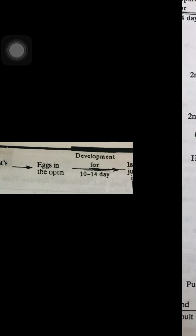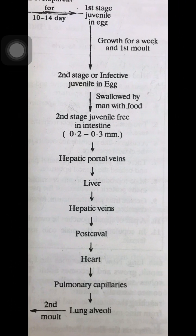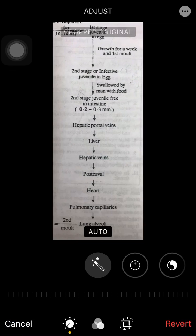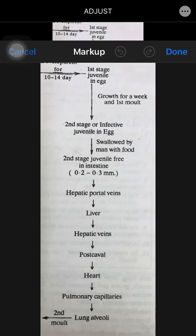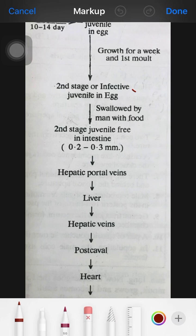After the first juvenile stage, a first molt converts it into the second juvenile stage, also called the infective juvenile stage. Further development requires high temperature, so it requires a human host. Infection occurs when eggs are swallowed by humans with food or water. Vectors such as cockroaches and flies can contaminate food and water with the eggs.